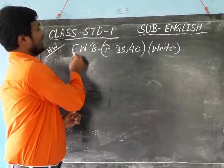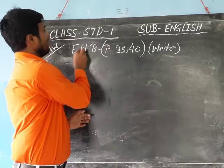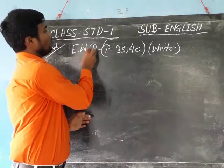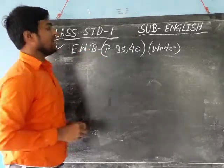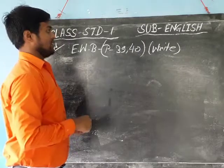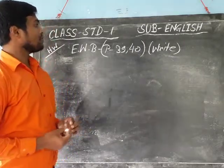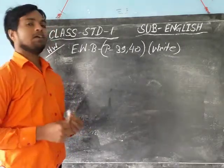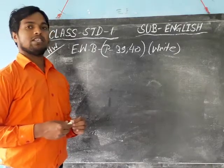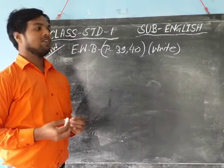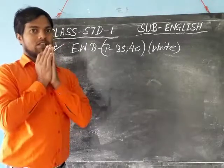Homework: English workbook, page number 39 and 40. Write the answers. If you have any problem, contact my mobile number: 7076157670. Namaste.